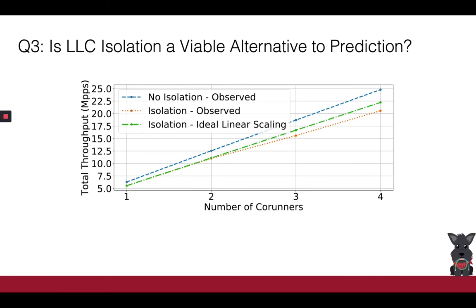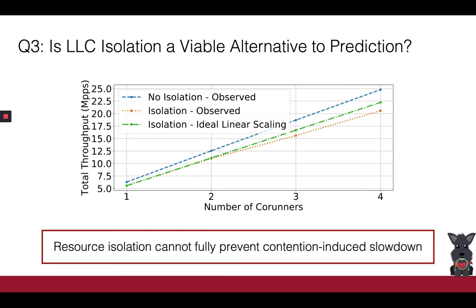Our last question is whether we could substitute performance prediction with contention prevention through resource isolation. This question stems from the recent release of CAT by Intel, a tool that partitions the last-level cache such that each core running an NF gets a dedicated slice of the LLC. Prior work has looked at preventing contention-induced slowdown this way, but we identified several issues. This graph shows that the observed throughput with isolation is far from ideal for two reasons: LLC isolation is not sufficient at eliminating contention, and LLC partitioning reduces the baseline throughput of the NF. However, in our paper we have an analysis of how SlowMo can be used in combination with CAT to accurately predict performance.